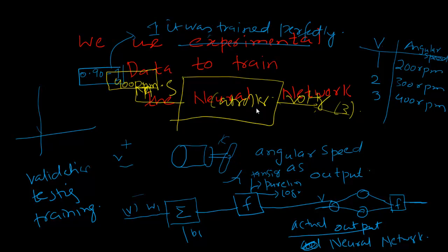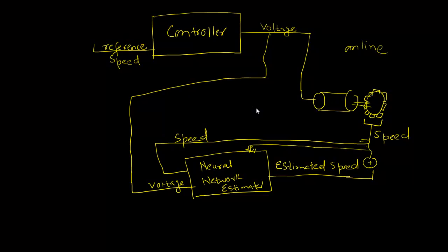The question remains how can we control the speed of a motor using artificial neural network, and that too online. So this is the graph I have made. This is the controller I was talking about. We set a reference, for example 300 RPM, and it will produce the value, for example 2 volts, and at this voltage the motor starts rotating.